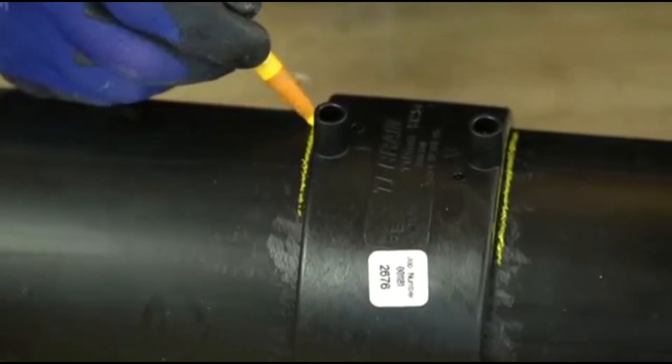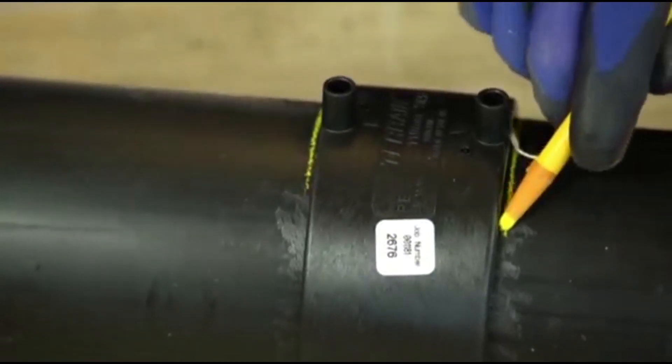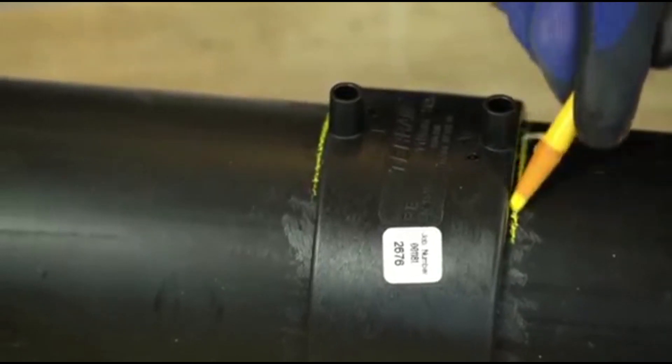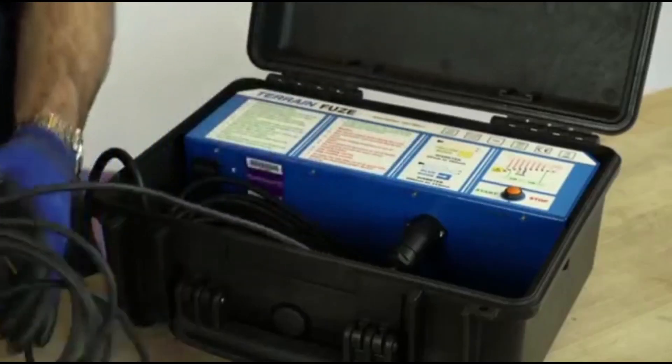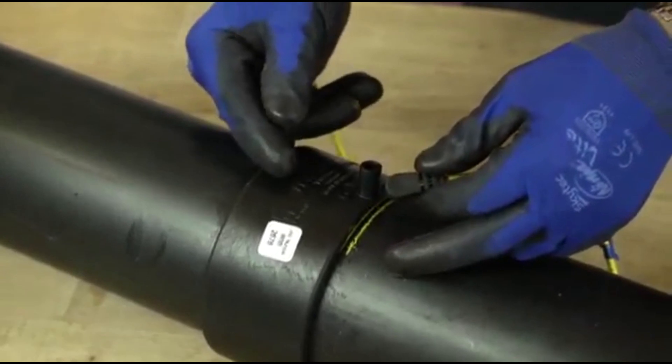It's a good idea to mark the pipe at the collar of the coupler so you can see if it moves or slips. Connect the electro fusion machine and switch on.